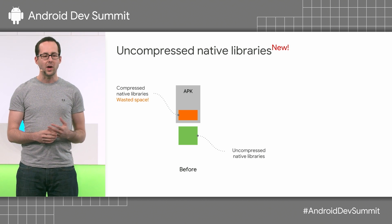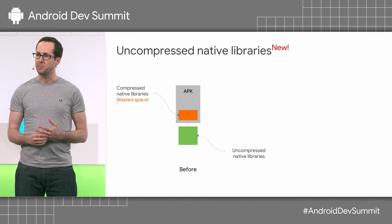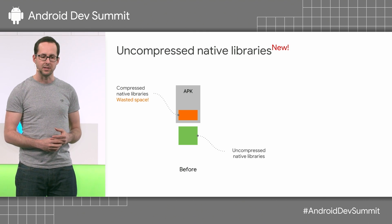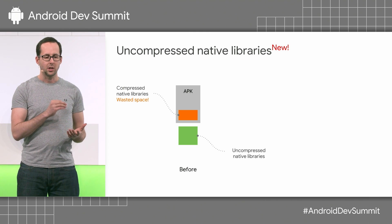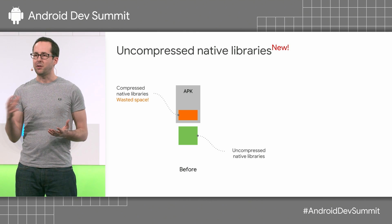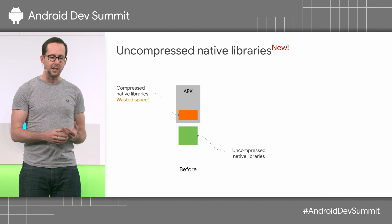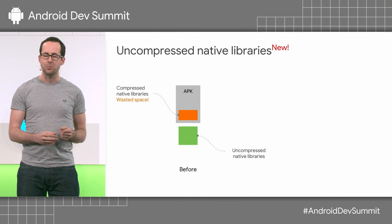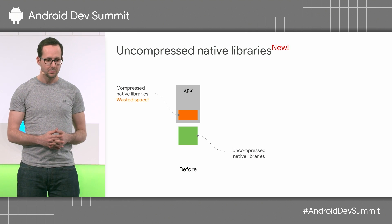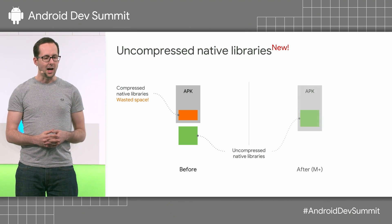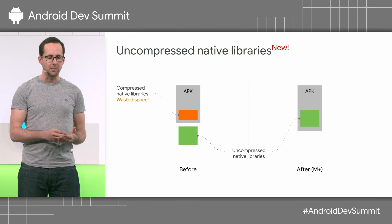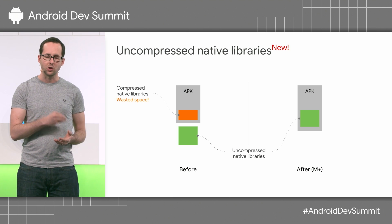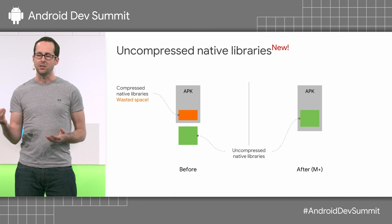We've added a new Android platform optimization to the app bundle called uncompressed native libraries. Here's how it works. On Android L and below, native libraries have to be uncompressed from the APK before the platform can use them, meaning the user ends up with two copies of the library. After Android M, the platform can read the library directly from the APK if it's left uncompressed, thus saving a copy on the device.